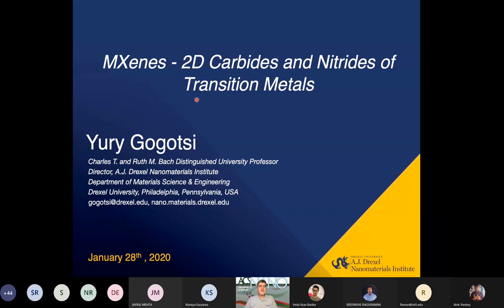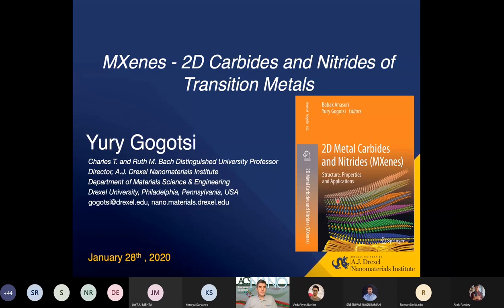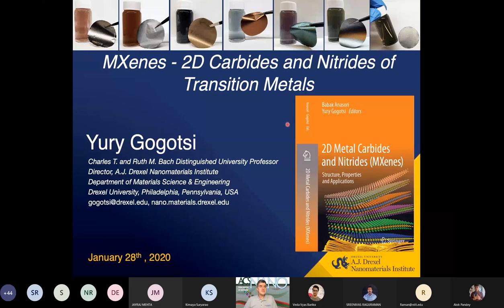You can read more about those in a book we published in Springer Nature last year. But those are numerous materials nowadays. The structure you can see in this cover image. Those materials are a couple of atoms thick where atoms of transition metal are connected by carbons or nitrogen. And they come, as you see, in a variety of different colors, unlike graphene, which is always black. And those are plasmonic colors, by the way. And also they offer a very wide variety of properties useful for numerous applications.